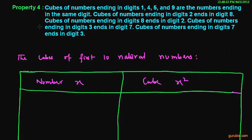Now we shall move to the fourth property: cubes of numbers ending in digits 1, 4, 5, and 9 are numbers ending in the same digit. This means if we calculate the cube of a number whose unit digit is 1, 4, 5, or 9, then the unit digit in the cube of that number will also be 1, 4, 5, and 9 respectively.